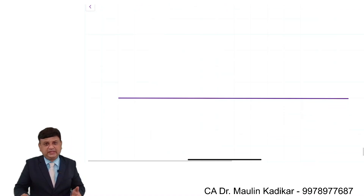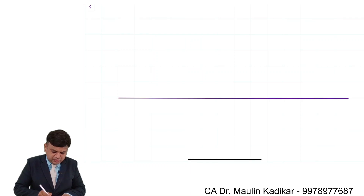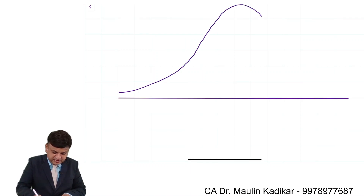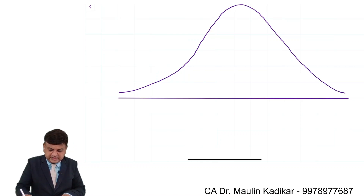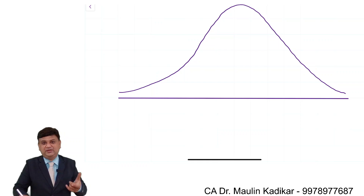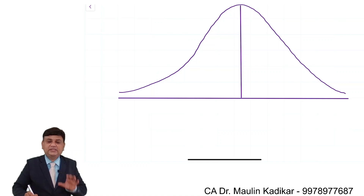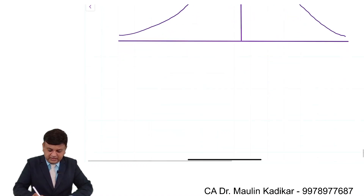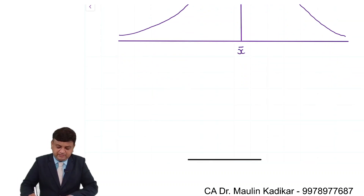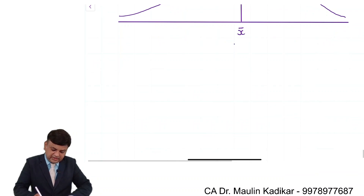This question is basically for the purpose of your understanding, just to make clear that standard deviation is indicating that it is a measurement of risk. These kinds of questions will not form part of the examination, but this is more for the purpose of understanding. In the diagram, exactly in between is X-bar — that is the mean return — which is 20% over here.